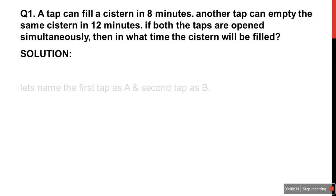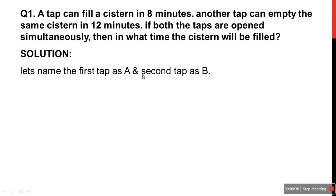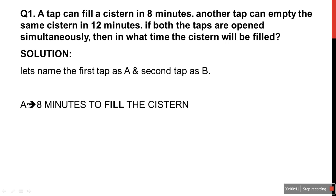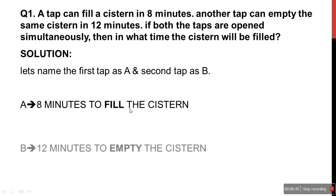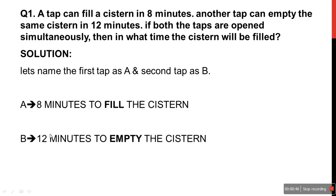The solution is like this: let's name the first tap as A and the second tap as B. Tap A takes 8 minutes to fill the system. Tap B will require 12 minutes to empty the system. Now, system means tank — don't get confused, it is just a tank.